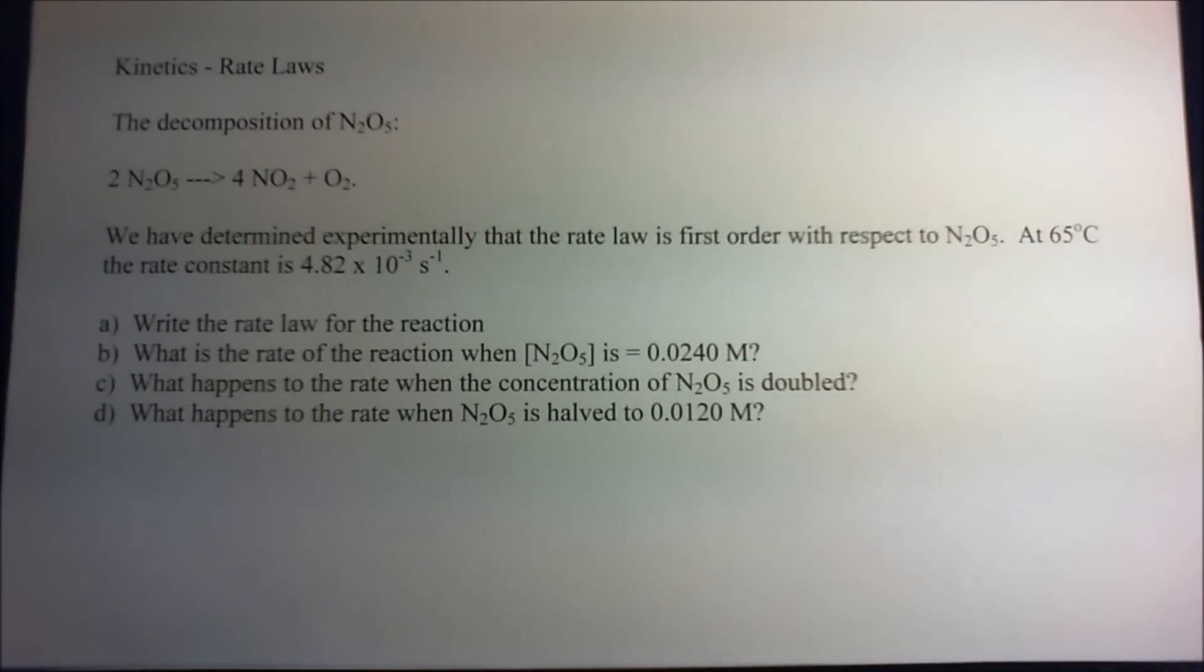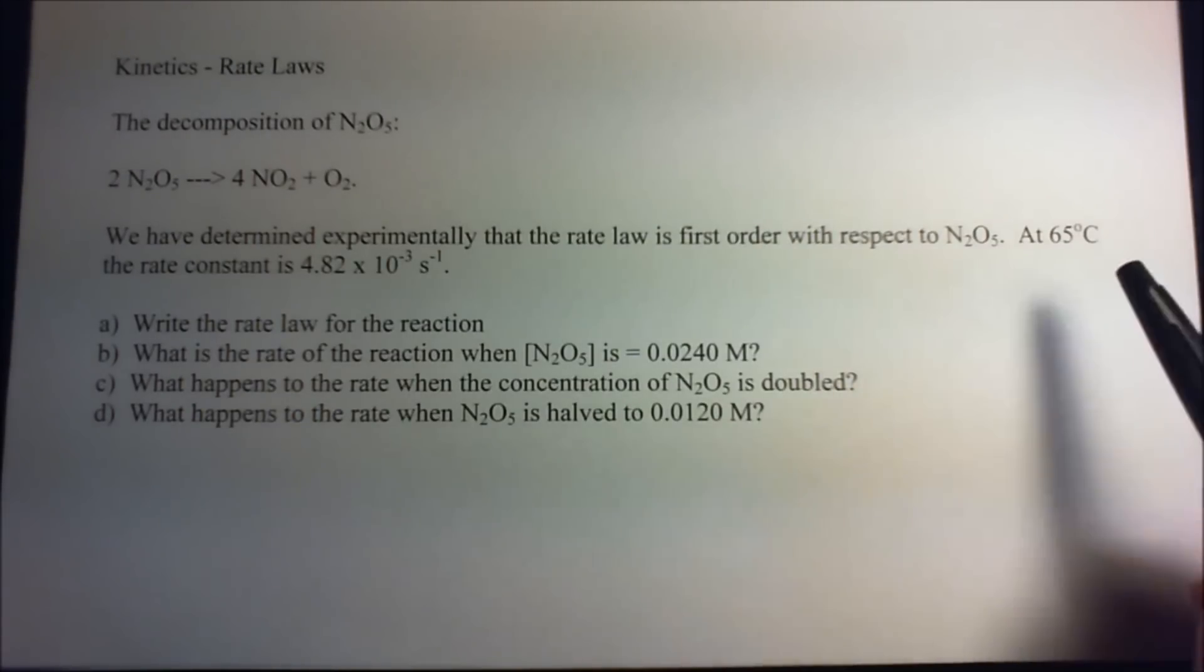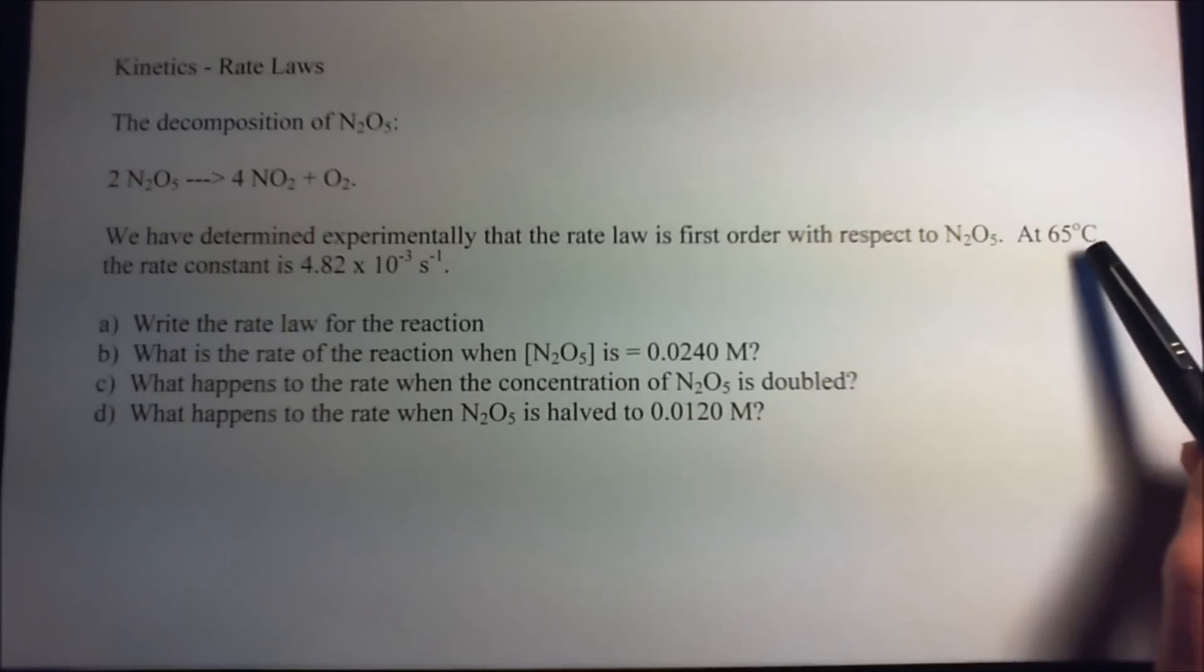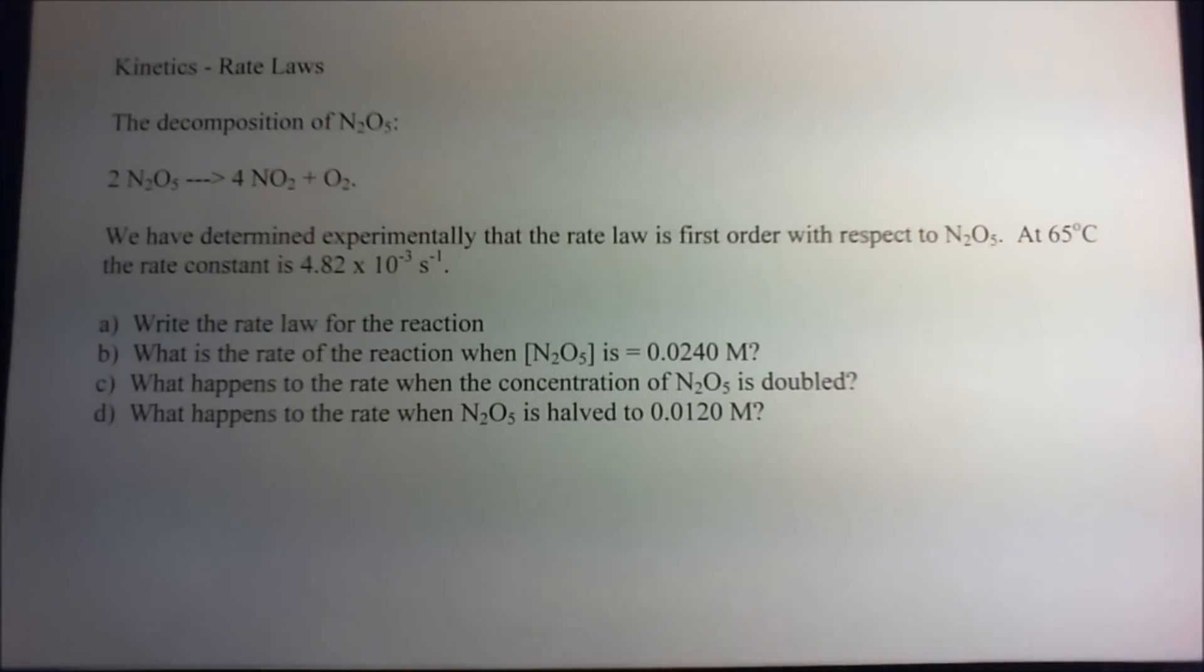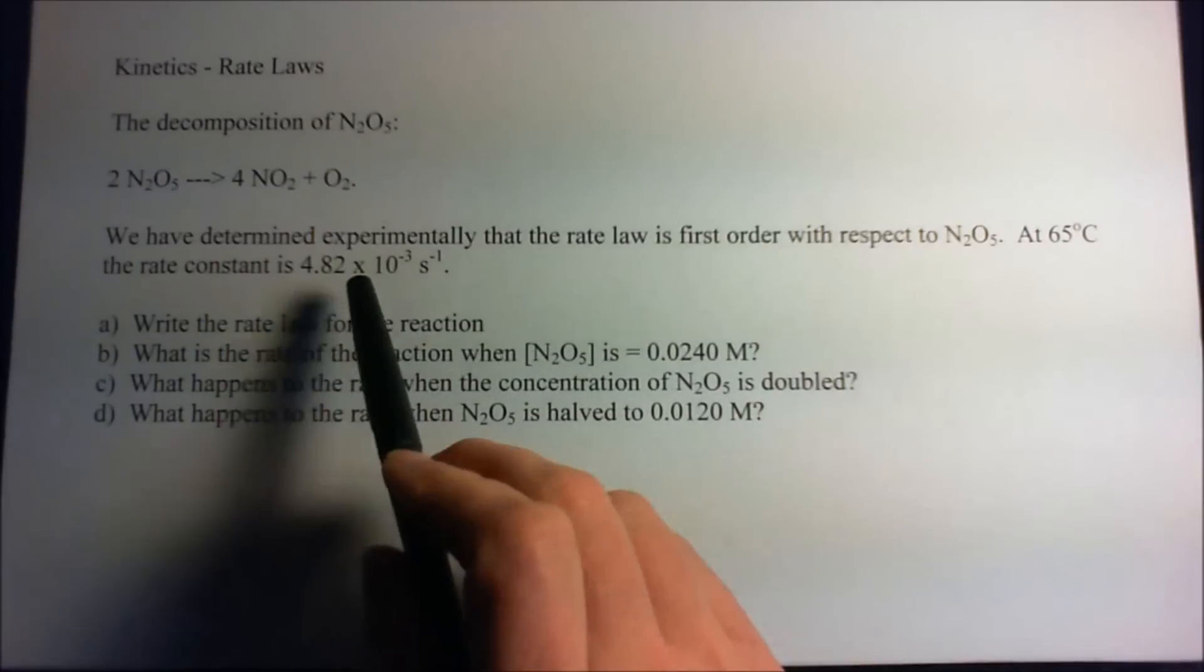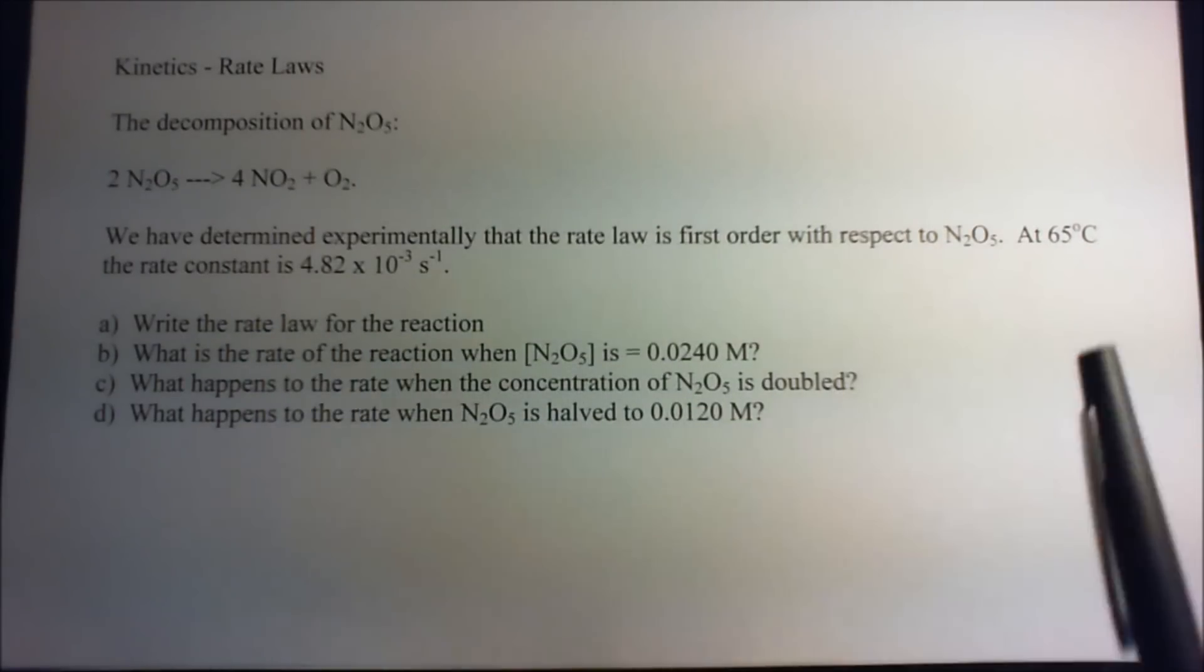At 65 degrees Celsius the rate constant is 4.82 times 10 to the minus third per second. Now this 65 degrees Celsius is just necessary because the rate constant depends on the temperature. It's not important for the problem but by definition this rate goes with that temperature.